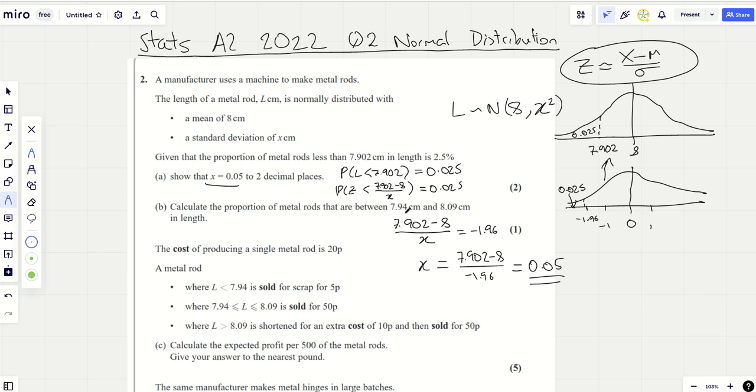Calculate the proportion of metal rods that are between 7.94 and 8.09. That's easy now because we just need to use our calculators for that. We can just plug it in, they tell you this answer here so you can still get part B right even if you can't get part A right. Plug that into your calculator, that's your lower bound, that's your upper bound normal CD. You get 0.849.